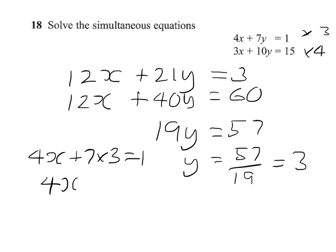So we've got 4x plus 21 equals 1. This gives me 4x equals 1 minus 21, so 4x equals minus 20. So x will equal minus 20 divided by 4, which equals minus 5.